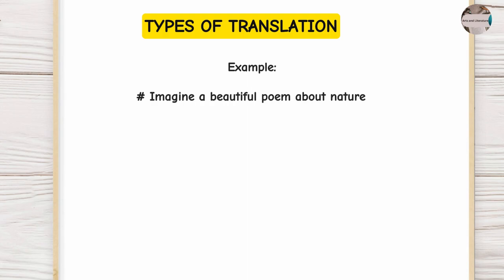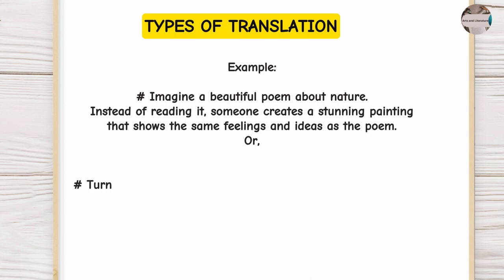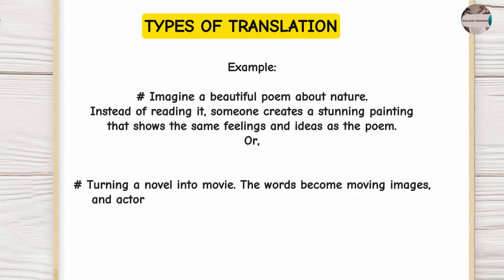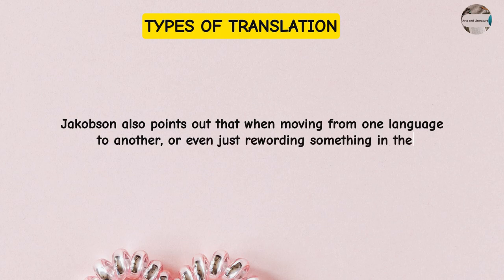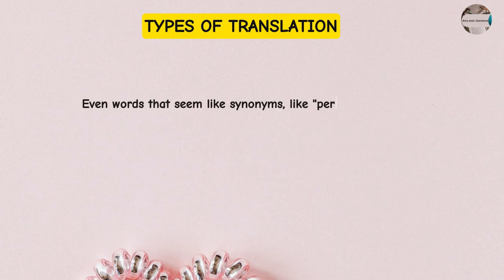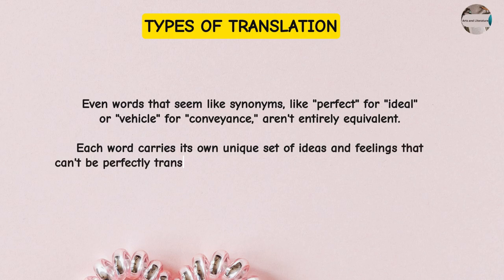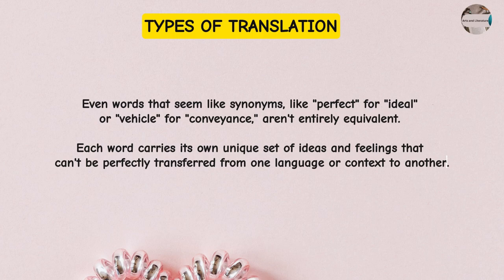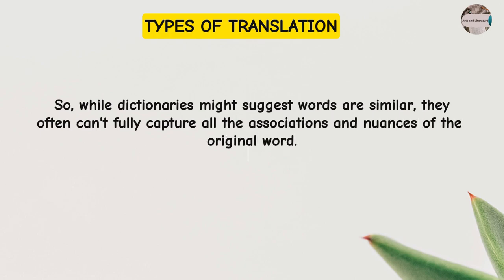For example, imagine a beautiful poem about nature. Instead of reading it, someone creates a stunning painting that shows the same feelings and ideas as the poem. Or turning a novel into a movie — the words become moving images and actors show what the characters are saying and doing. Jakobson also points out that when moving from one language to another, or even just rewriting something in the same language, there is rarely a perfect match in meaning. Even words that seem like synonyms — like 'perfect' for 'ideal' or 'vehicle' for 'conveyance' — aren't entirely equivalent. Each word carries its own unique set of ideas and feelings that can't be perfectly transferred, so dictionaries often can't fully capture all the associations and nuances of the original word.